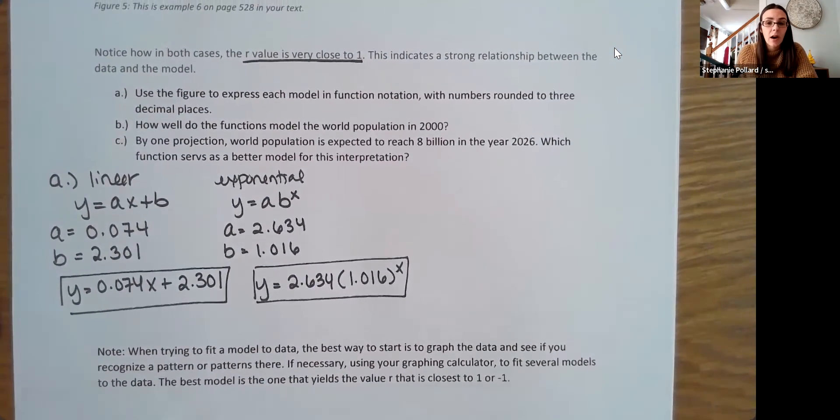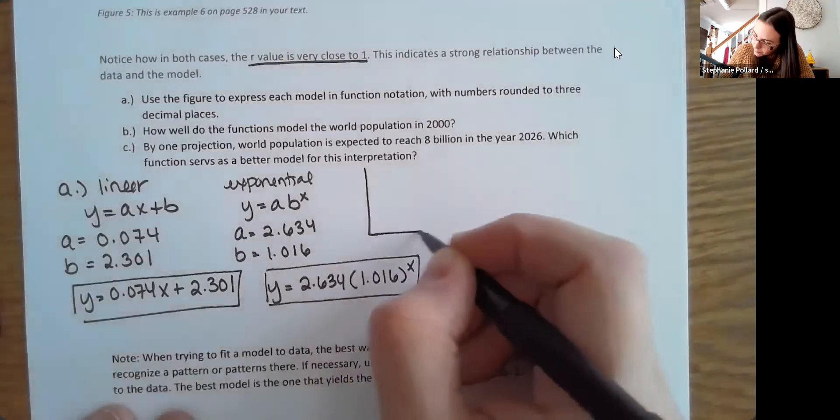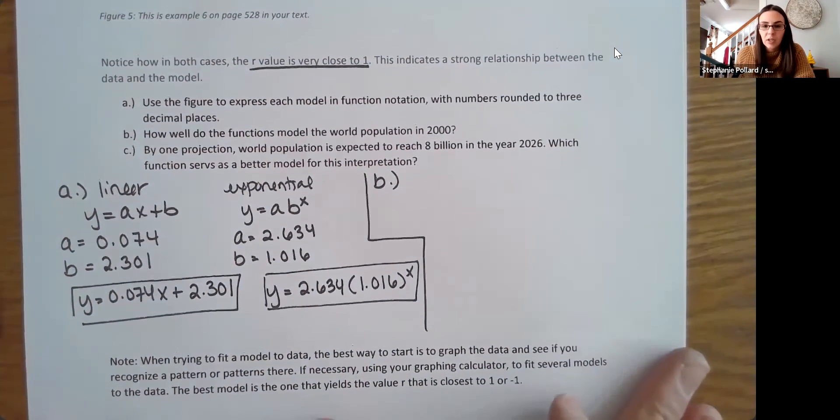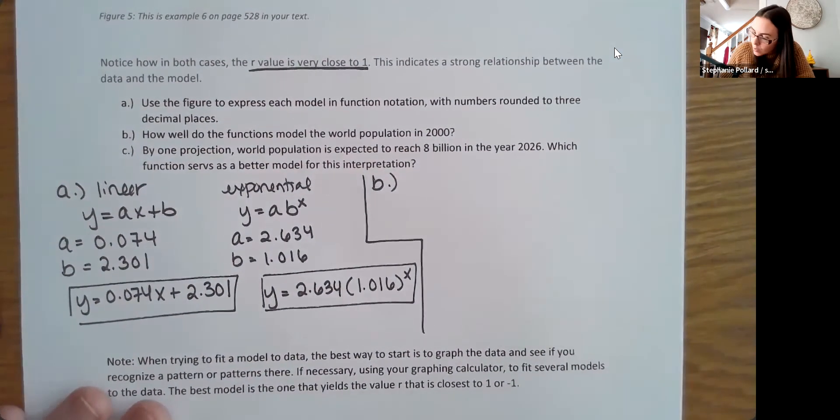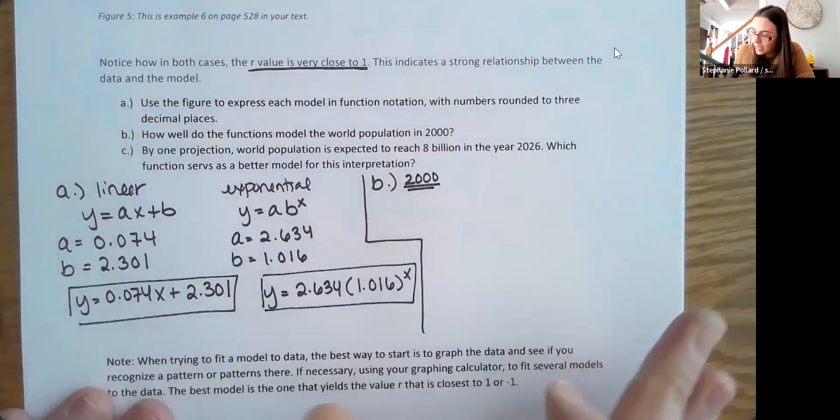And again, both of these seem pretty good. Your R value is almost one in either case, which indicates a strong model, so a strong correlation there. So let's answer the next part. How well do the functions model the world population in 2000? So let's focus on the year 2000 here.